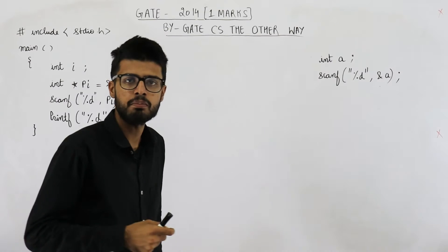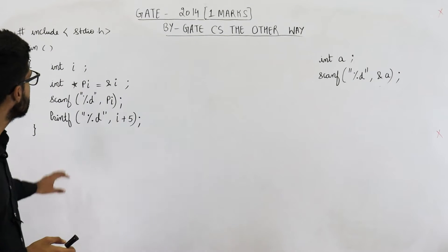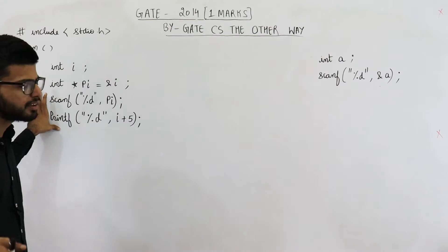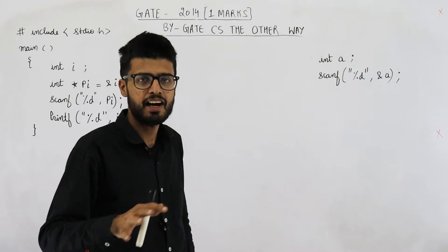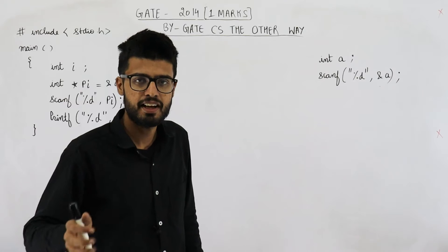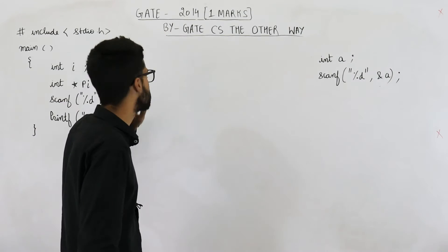So option A was there will be a compilation error. Option B was there will be a runtime error. Something was there in option C and D. I don't remember what were option C and D. Anyways, let's see what will happen if you run it.